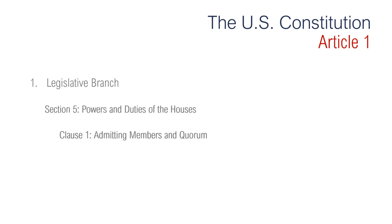Moving on to Section 5, regarding powers and duties of the houses. Clause 1 is regarding admitting members and quorum. It explains that each chamber may exclude or refuse to seat a member-elect. The quorum rule requires that 218 members of the House and 51 members of the Senate be present to conduct business. This rule normally is not enforced in the handling of routine matters.